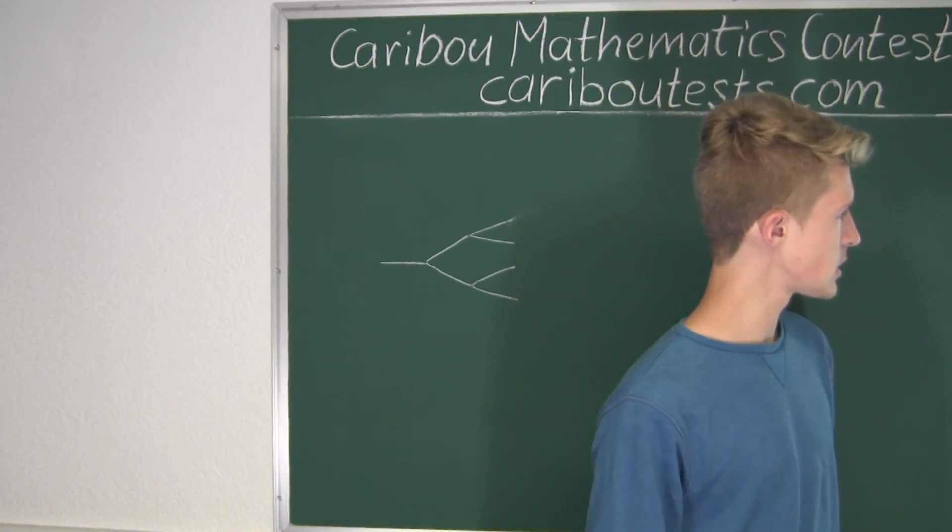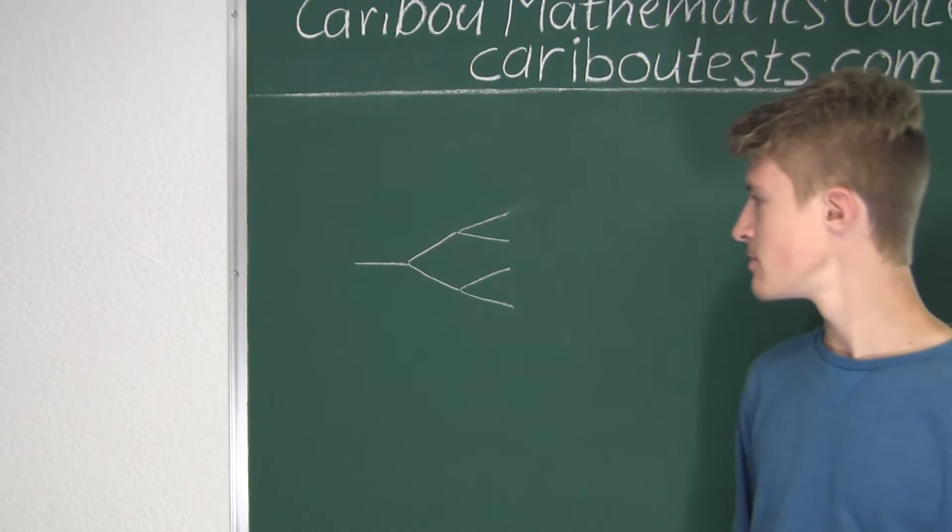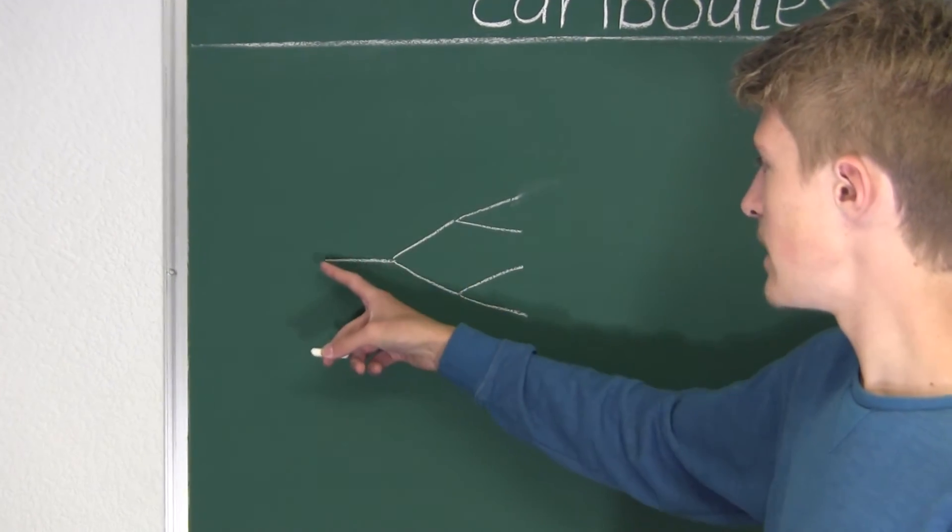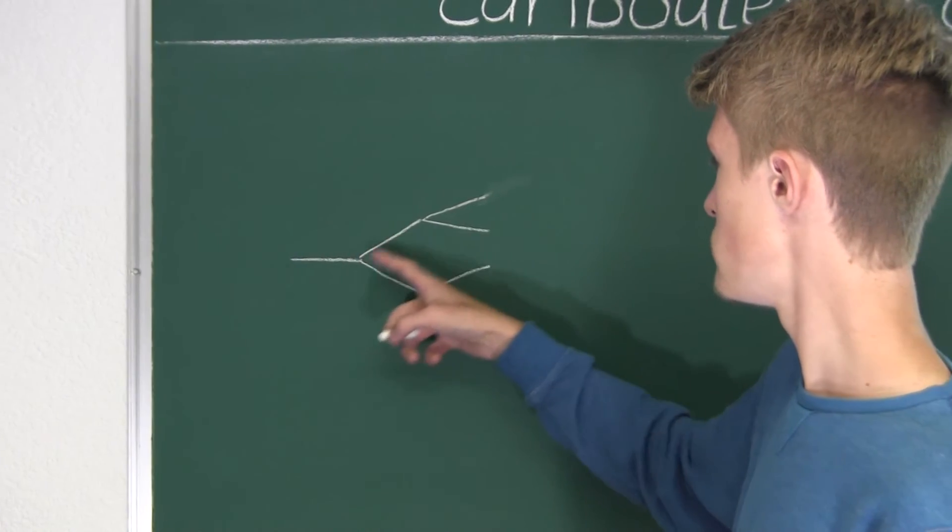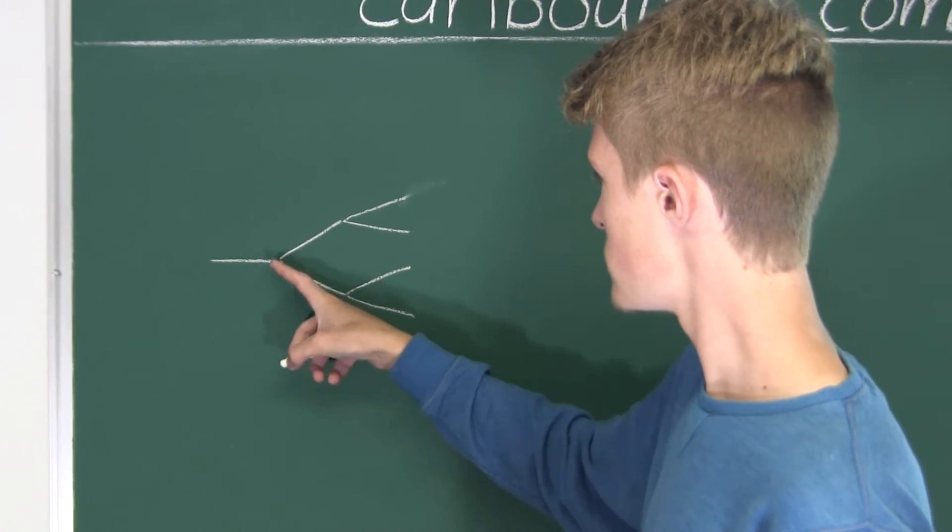Now the question is, what is the total length of all the branches? So of course we had the first branch, and then we know that that branch split into two more. So we already have one, two, three.